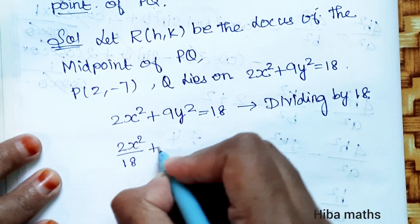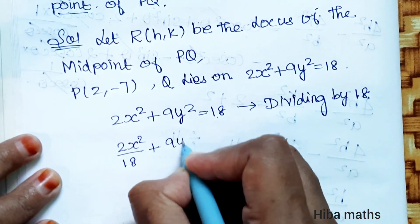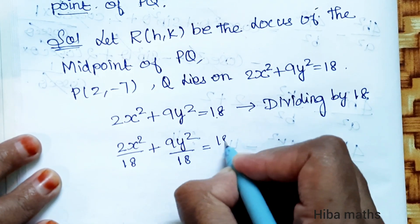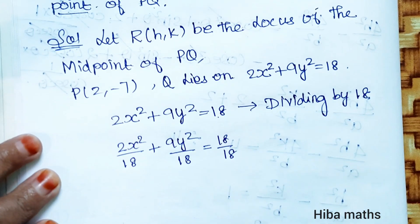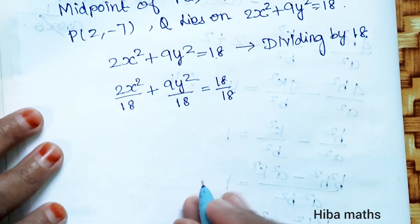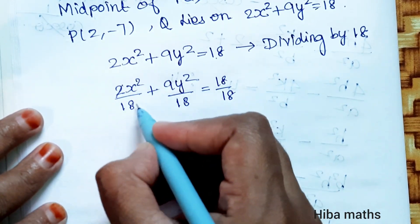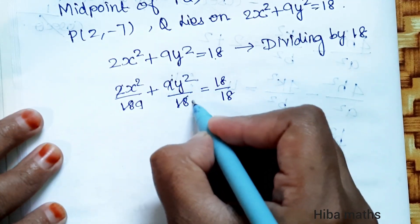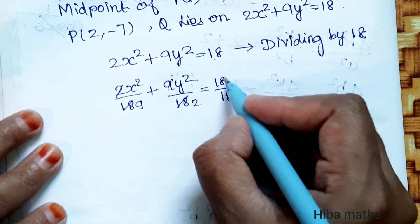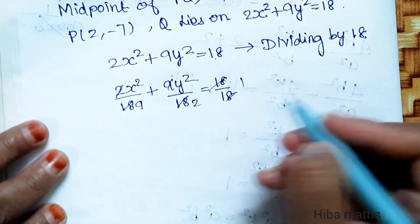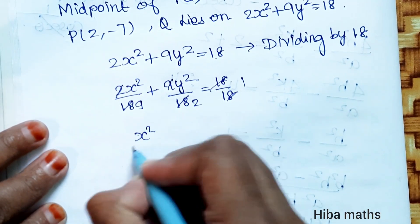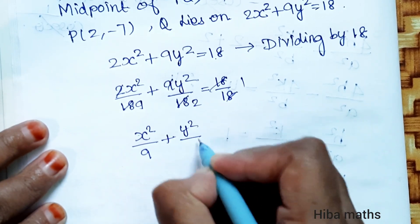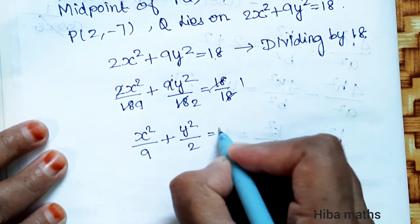We rewrite 2x² + 9y² = 18 in standard form by dividing throughout by 18: 2x²/18 + 9y²/18 = 18/18, which simplifies to x²/9 + y²/2 = 1.